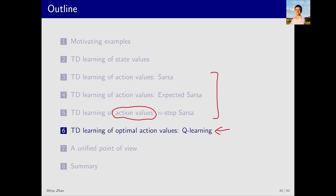Q-learning is a very classic algorithm that is still used today, particularly in its variant deep Q-learning. The main difference between Q-learning and SARSA lies in what they estimate mathematically. Q-learning directly estimates the optimal action value, so it doesn't need to alternate between policy evaluation and policy improvement.